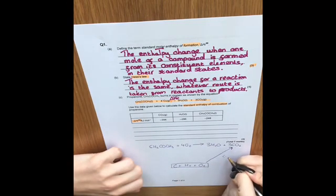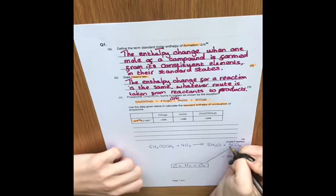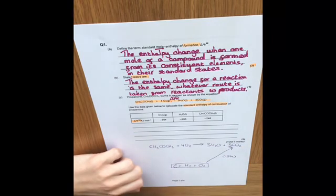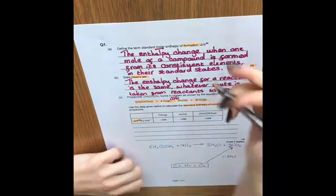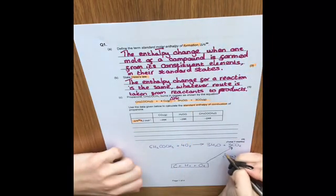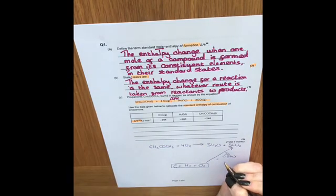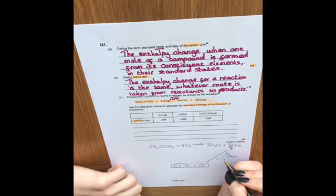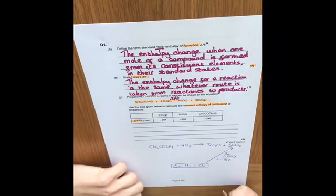Now the value for that is -394, but obviously we have to recognize that we've got three moles, and this is the enthalpy change for standard molar enthalpy of formation - it's only for one mole. So we need to multiply that number by three, and if you put that into your calculator, you'll get -1182.